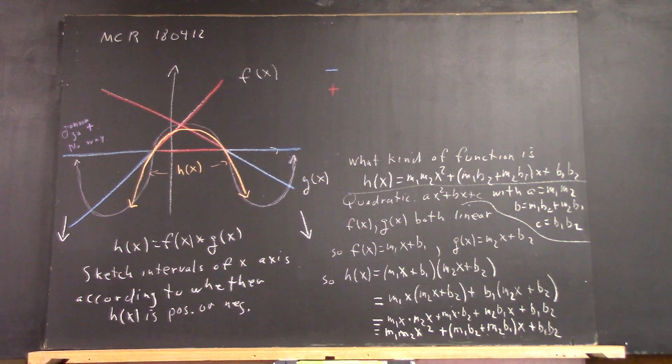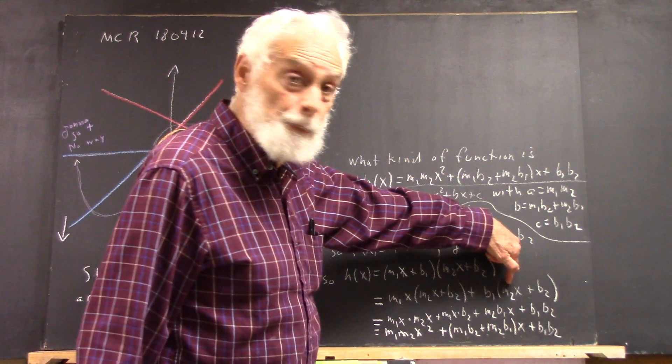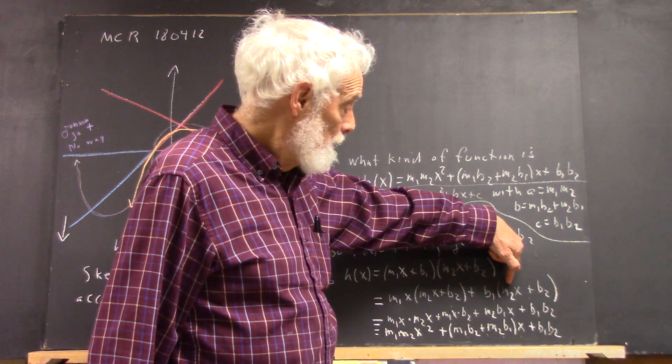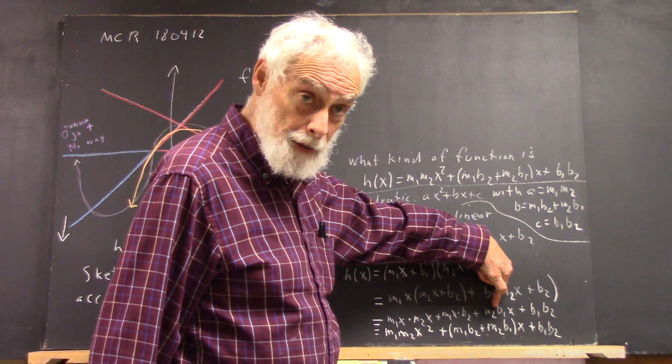After you do the distribution law, the distribution law, you got m2b1x. Yeah. Well, it's b1m2x, right? All right. That's what I was confused. But that's the same as m2b1x.